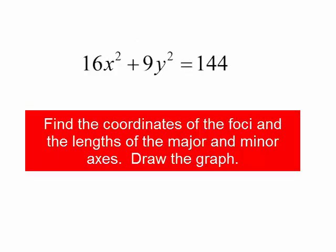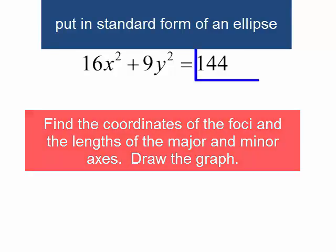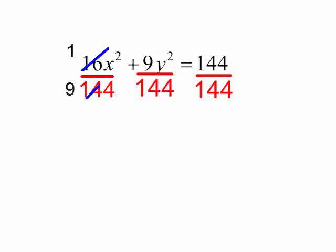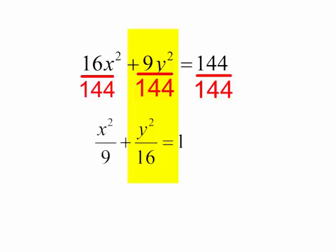To begin, I need to put this in the standard form of an equation for an ellipse. I need the constant to equal 1, so I will divide each term by 144. 16 over 144 can be reduced to get x squared over 9. When I reduce 9 over 144, that will be 1 sixteenth, so I will get y squared over 16. And 144 over 144 is just 1. This is the standard equation of my ellipse.